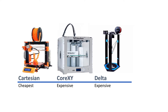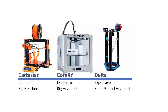Cartesian 3D printers are the cheapest ones, while Core XY and Delta 3D printers tend to be more expensive. The reason mostly comes from the cost of the Delta printer's extrusions and the complexity of the Core XY 3D printers. Cartesian style 3D printers are relatively simple.